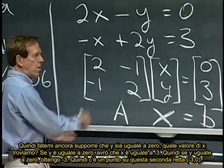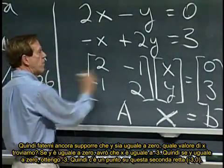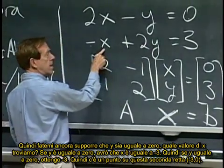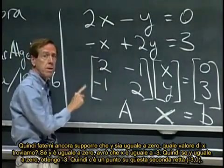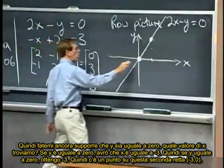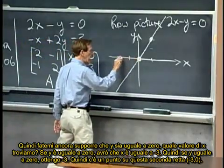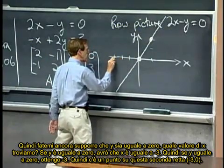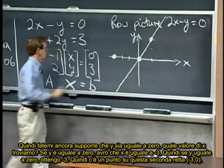So let me again say, suppose y is zero, what x do we actually get? If y is zero, then I get x is minus three. So if y is zero, I go along minus three. So there's one point on this second line.